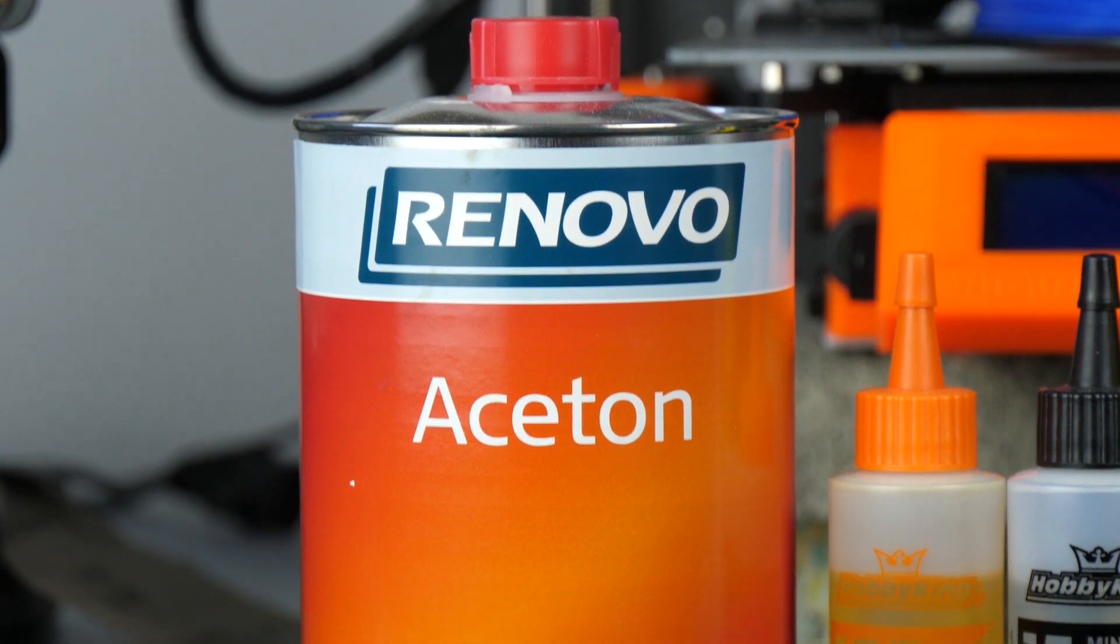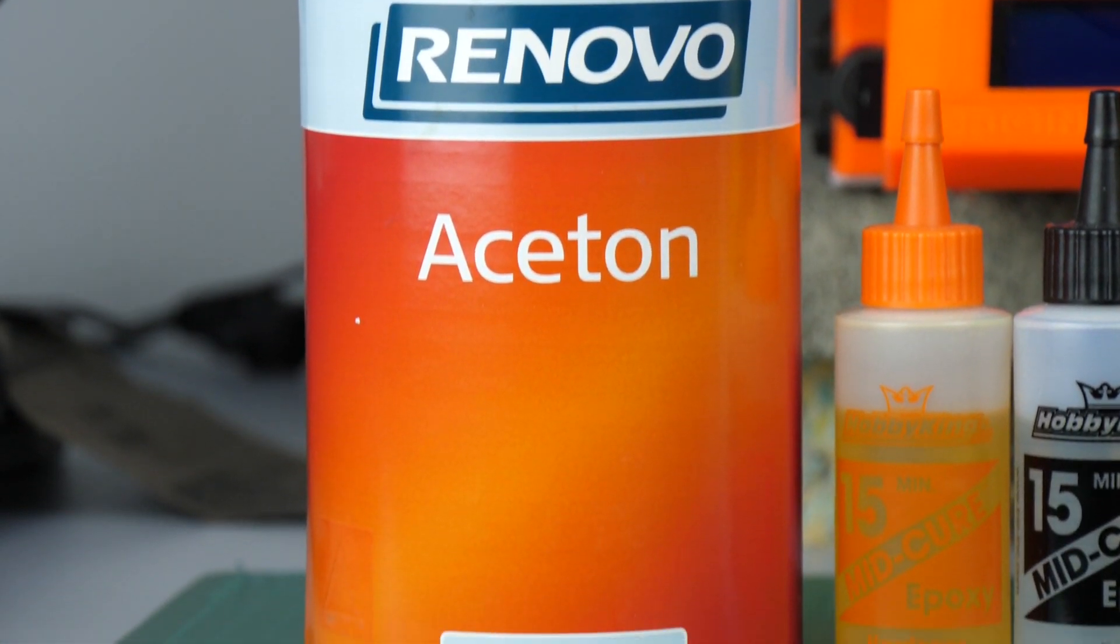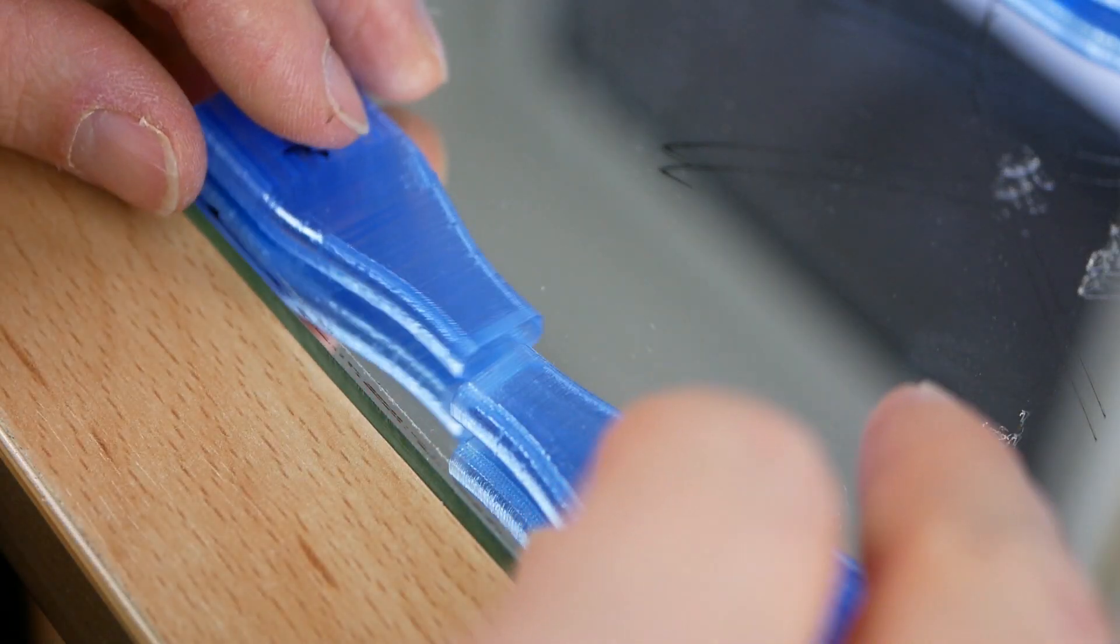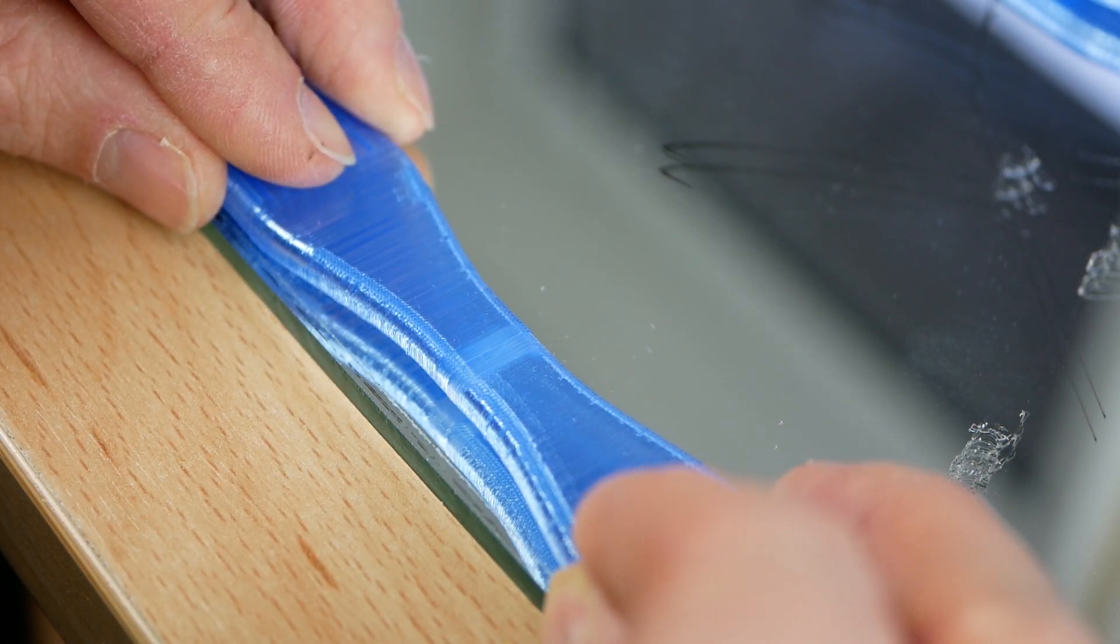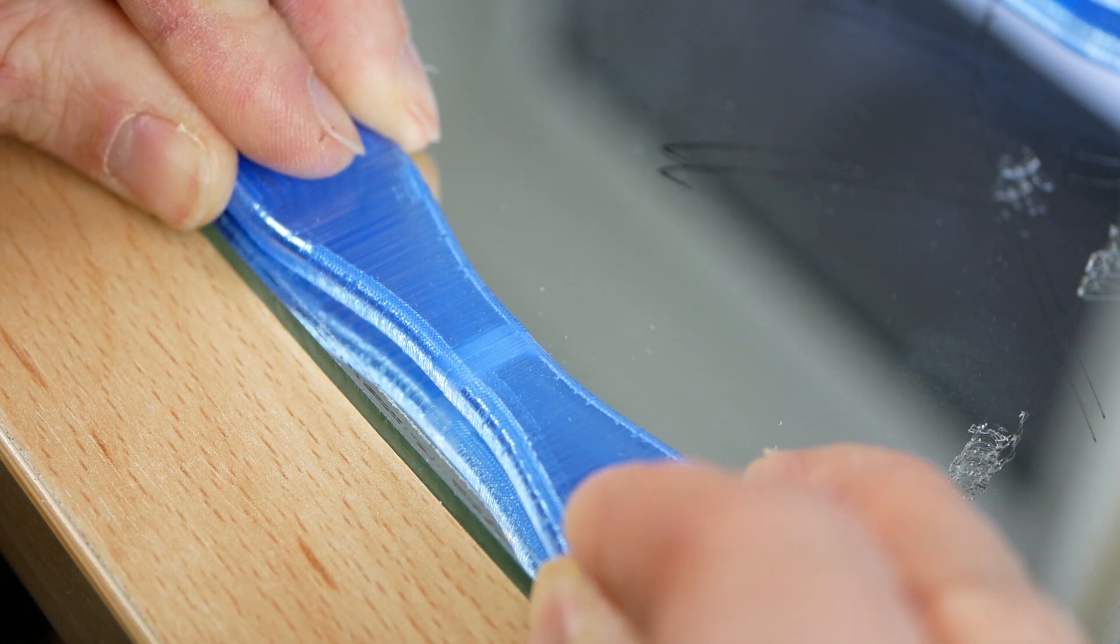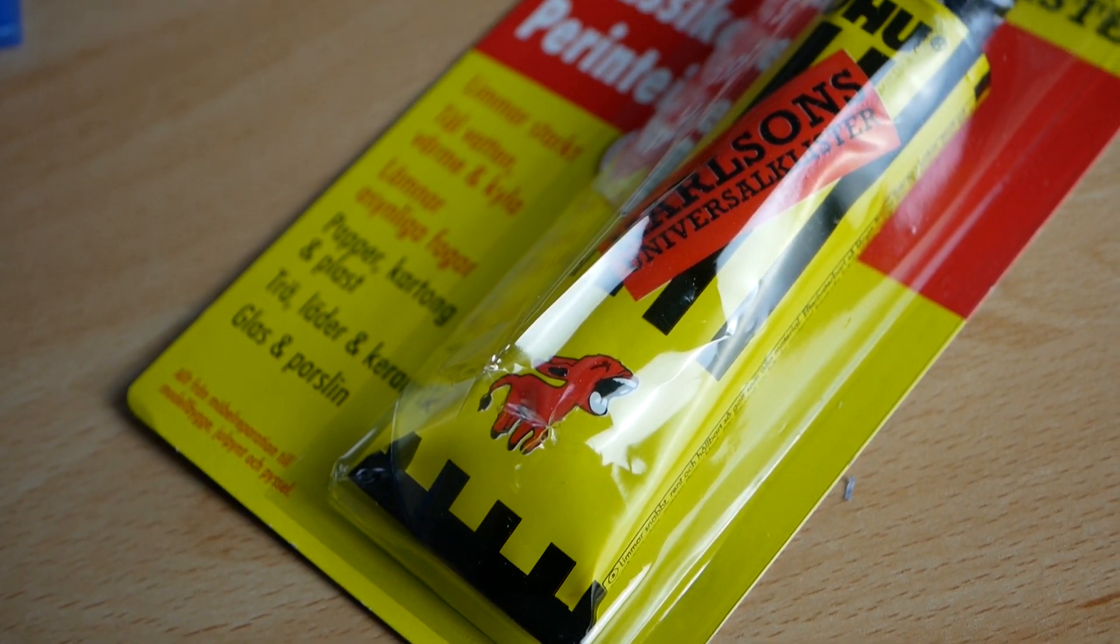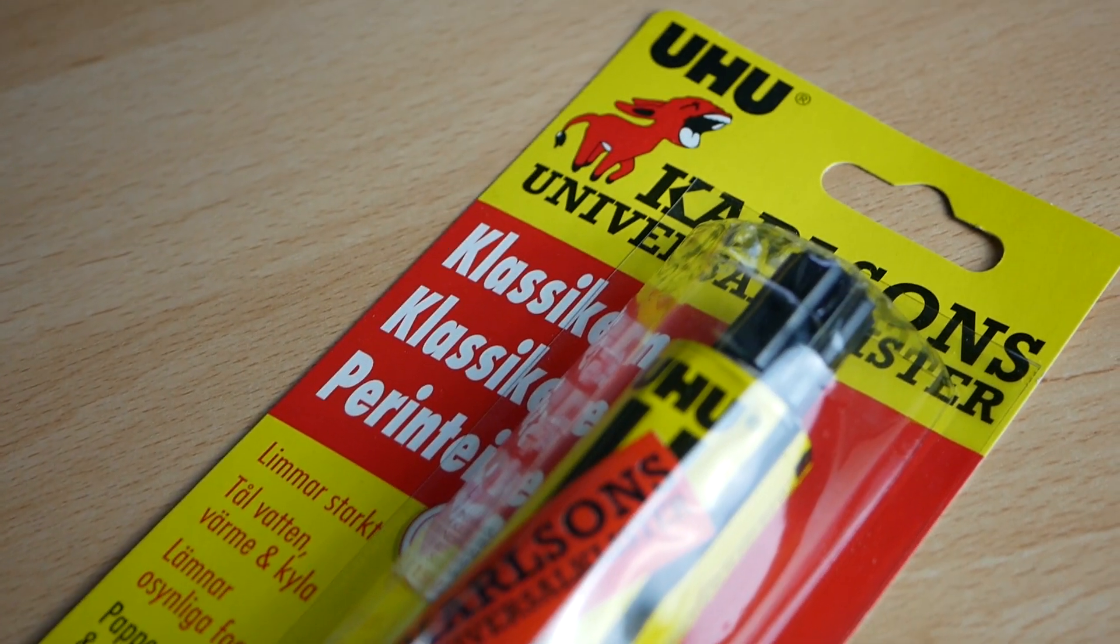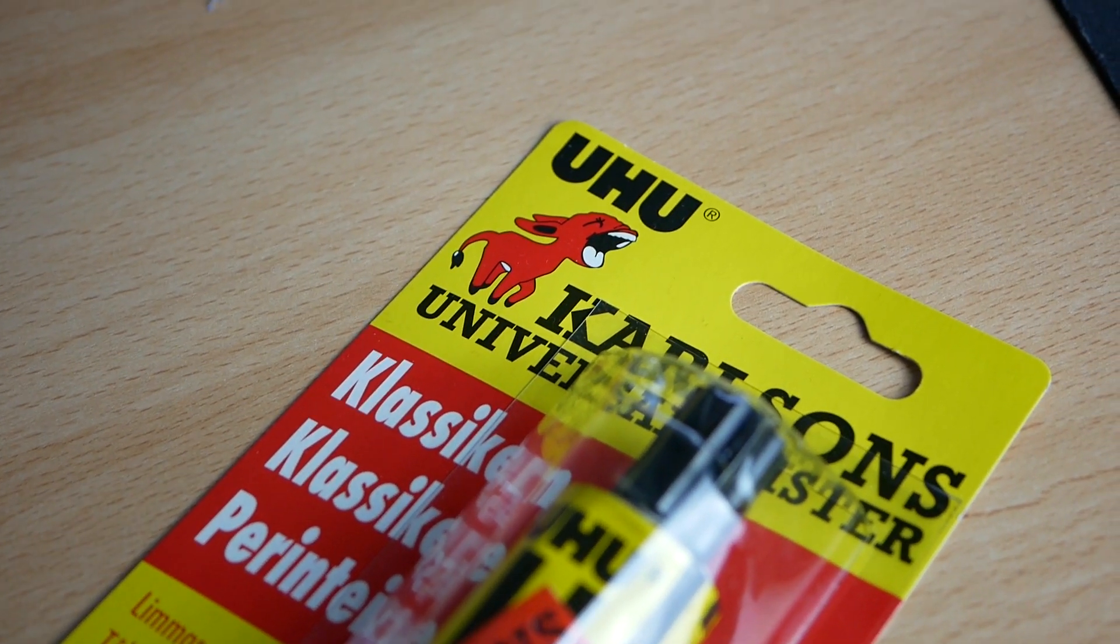If you have ever worked with ABS you probably know that you can dissolve and glue this material with acetone. Many don't know that acetone gluing also works with PLA so I also added this to the study. At last a Swedish viewer who has also watched the first part sent me some Uhu glue where he said that he already had good results with.